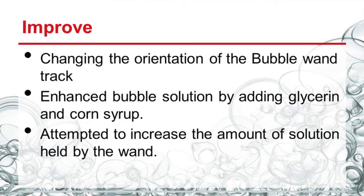Next we needed to enhance our bubble solution, as the bubbles were very weak and not stable. We not only added glycerin but also corn syrup to increase the surface tension of our bubbles. Finally, we came to the problem of bubble wands — our pipe cleaners were rusting in just a couple of days of testing. So we moved on to coated wire, but this did not pick up very much solution. We tried doubling up on the wire, twisting it, and making it more feasible to pick up the solution, yet this did not work as well as we wished.